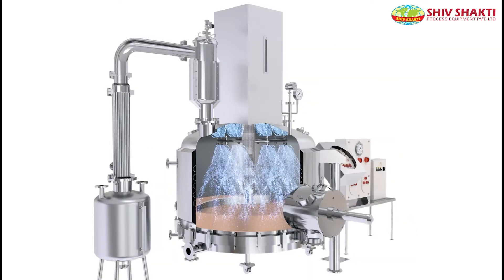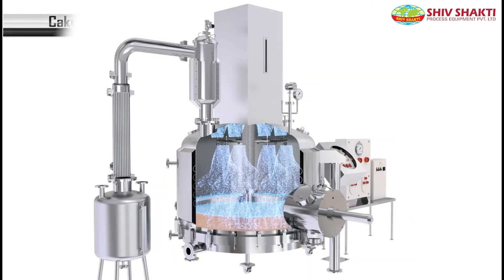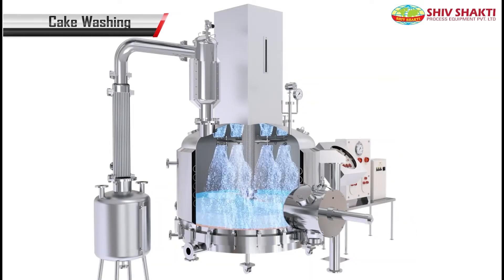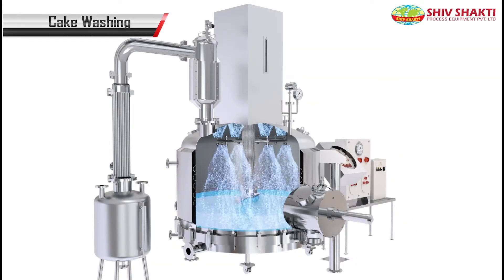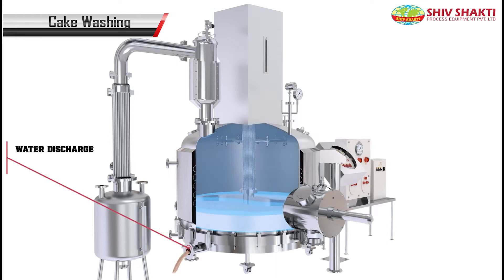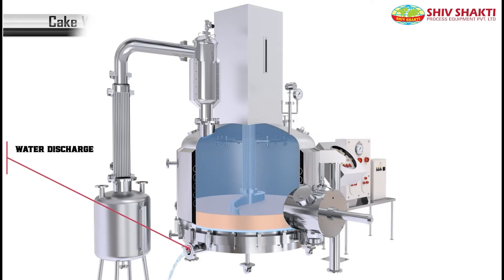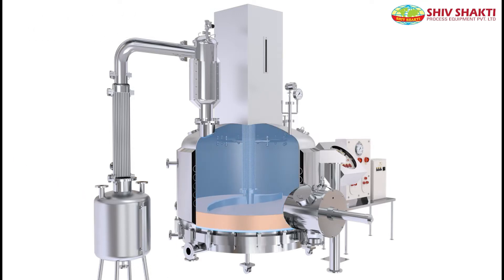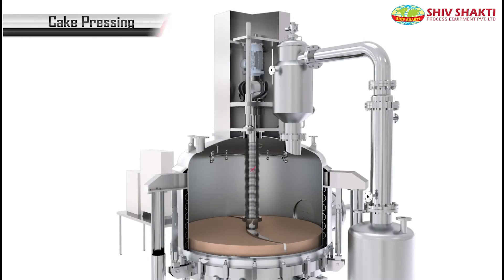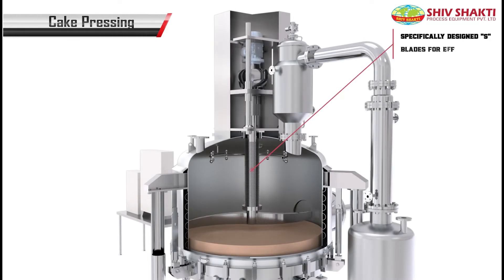In the washing process, water is sprayed through CIP nozzles and nitrogen pressure is applied, due to which the water with slurry is drained. Again, the cake pressing process takes place.